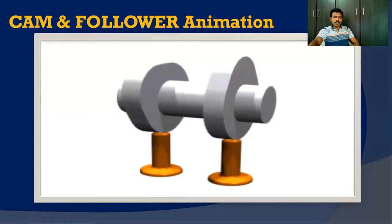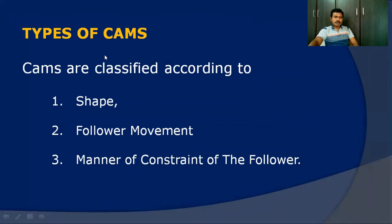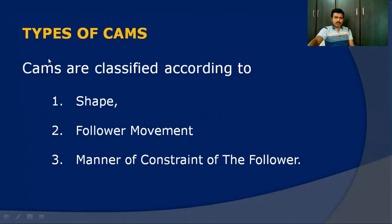In the next part, we will see the types of cams. In this introduction part, we will first see the classification of cams, and later classify the followers. The cams are generally classified according to three parameters: based on the shape of the cam, based on the follower movement — the type of movement attained at the follower — and the manner of constraint of the follower, meaning the way in which the follower is constrained to get a definite motion.